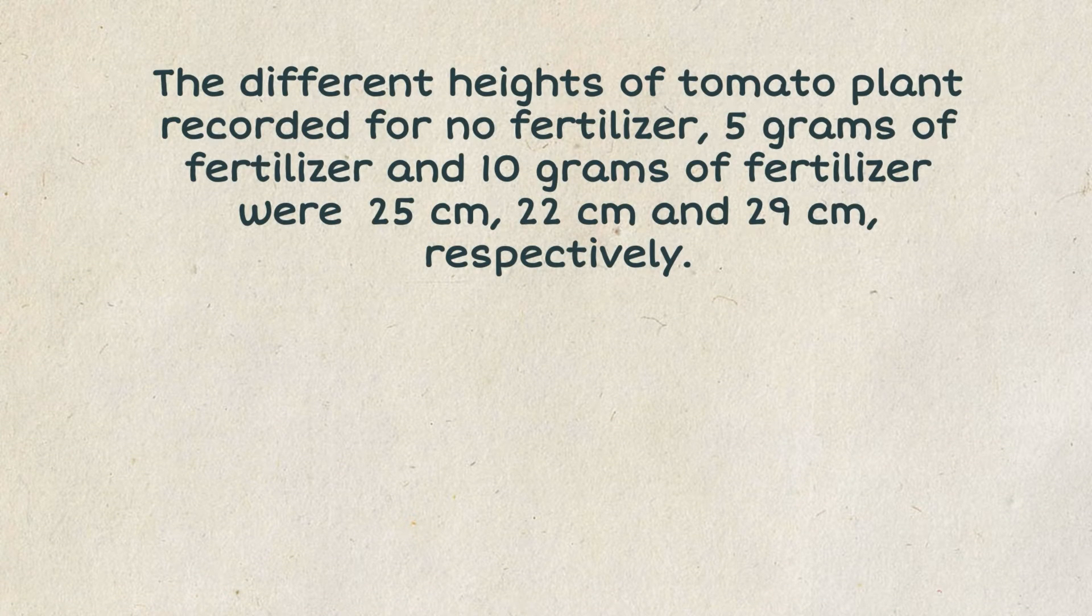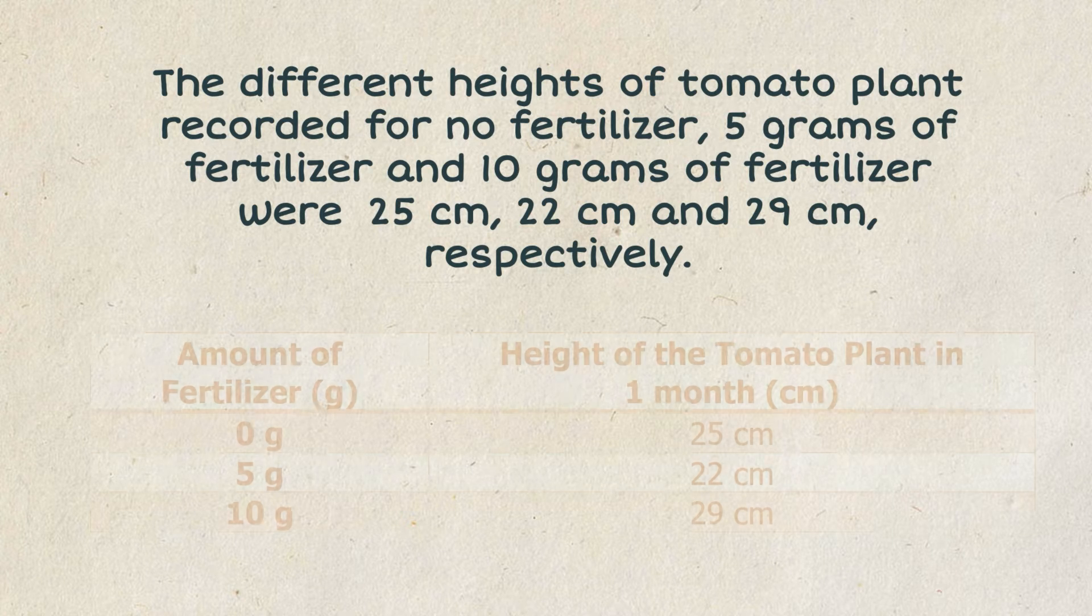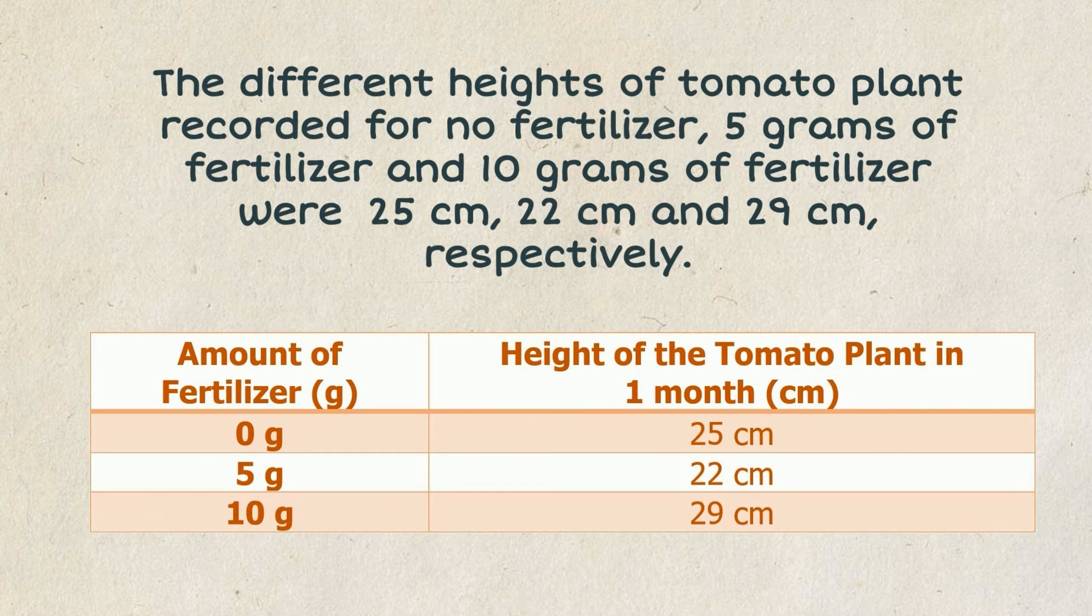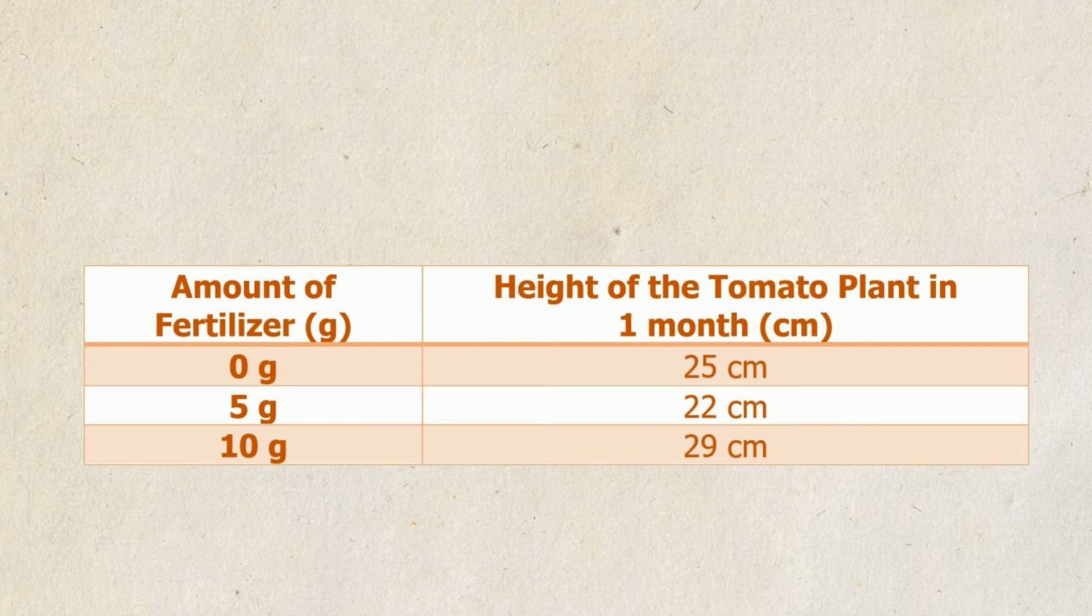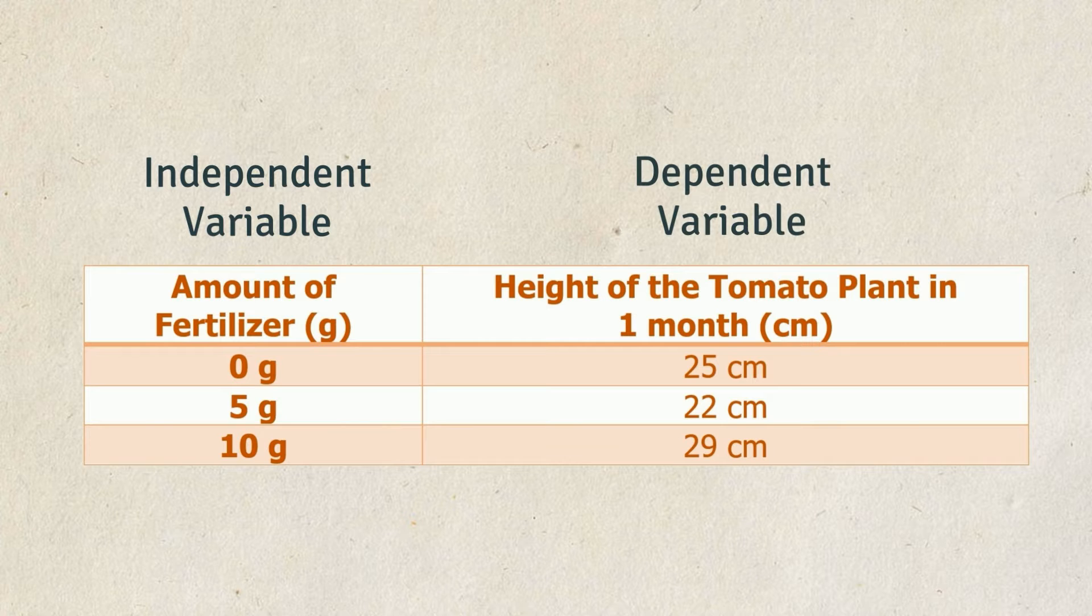For example, instead of writing the results in a paragraph form like this, we can actually put the results in a data table like this. And notice that in constructing your data table, the left column is your independent variable, while the next column or columns will be your dependent variable.